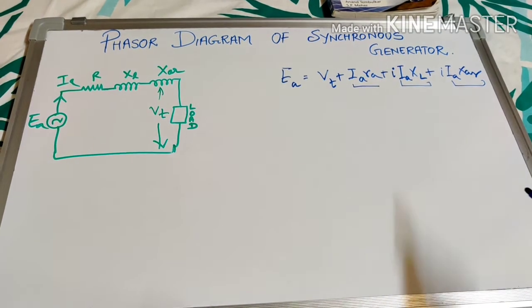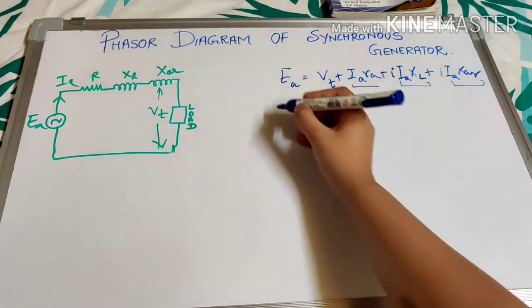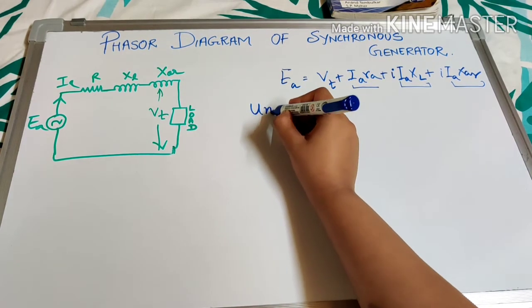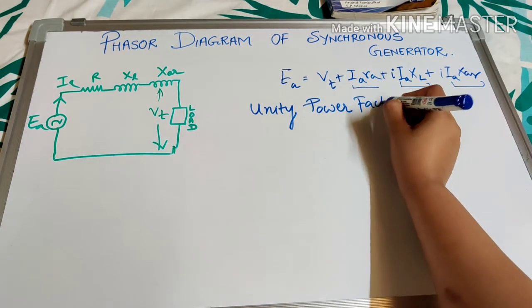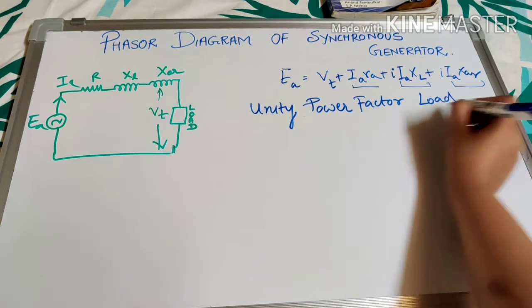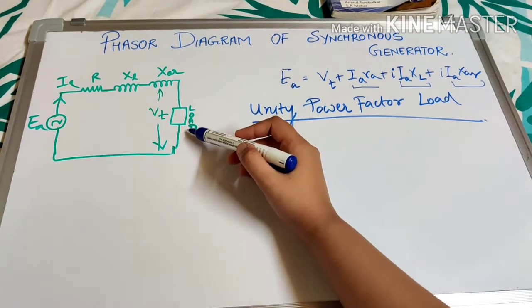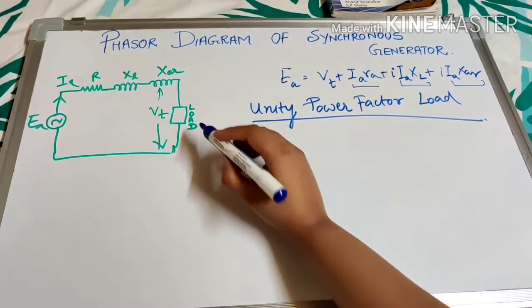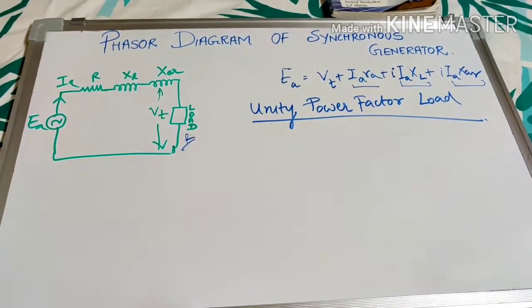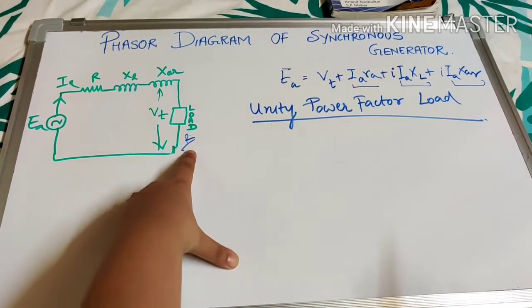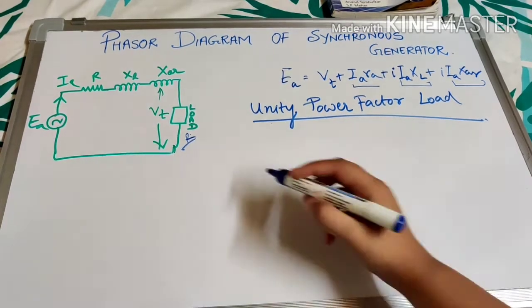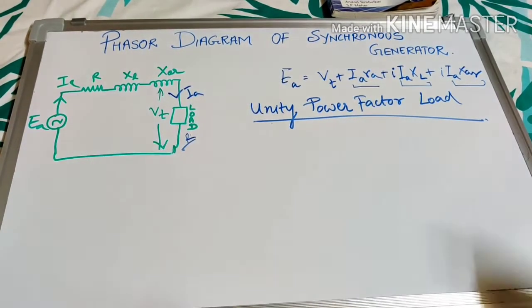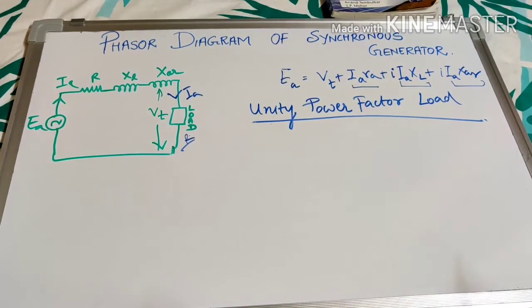Now we will draw the phasor diagram for unity power factor load. Unity power factor means this is a purely resistive load where cos(φ) = 1. For a purely resistive load, the terminal voltage and load current are in phase — there is no phase difference between them.